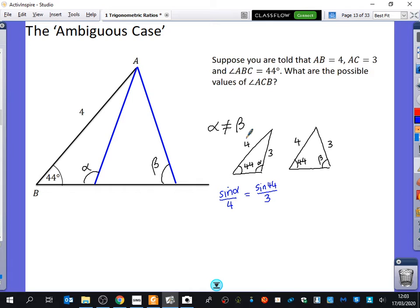Then for this second triangle that I've got, if I was to write that out, I would say it would be sine beta over 4 equals sine 44 over 3. So I've come up with exactly the same thing, and yet we know that alpha and beta are different to each other.